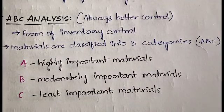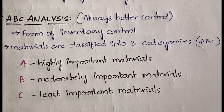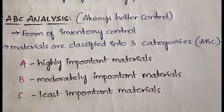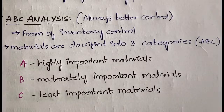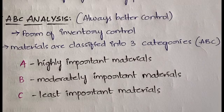For any organization there will be some materials which are highly important — for example, in our daily life, pulses or rice are very important. We also have some moderately important materials like sauces or mayonnaise. Similarly, in industries the raw materials can be classified into highly, moderately, and least important according to ABC analysis, based on the importance of that material.